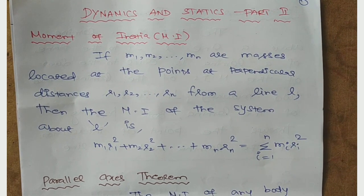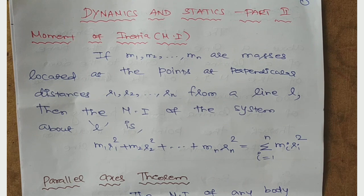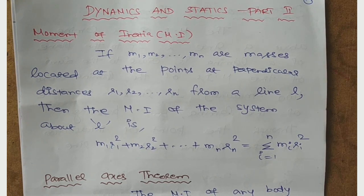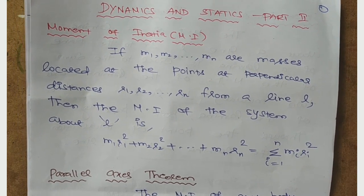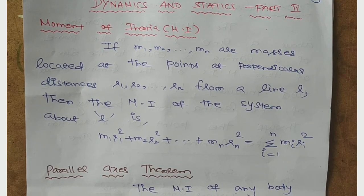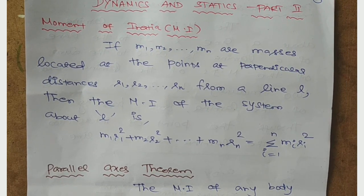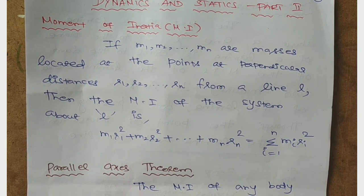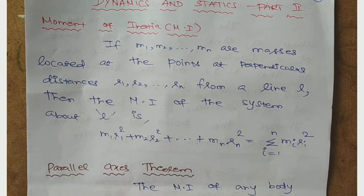The moment of inertia means that if M1, M2, up to Mn, their masses are located at the points at perpendicular distance R1, R2, up to Rn from a linear line L, then the moment of inertia of the system. The moment of inertia is the relation between mass and perpendicular distance, like M1 R1, M2 R2, up to Mn Rn.